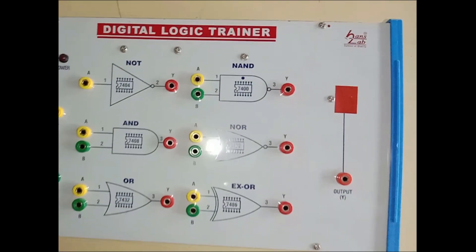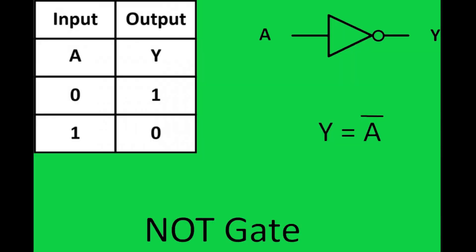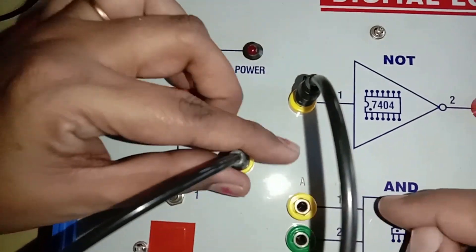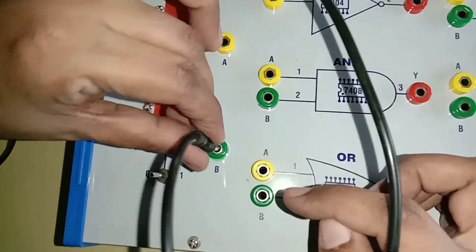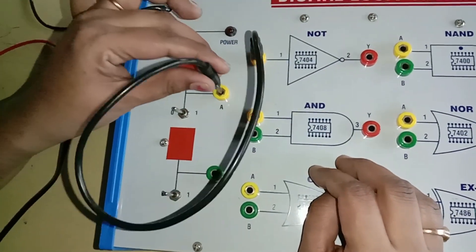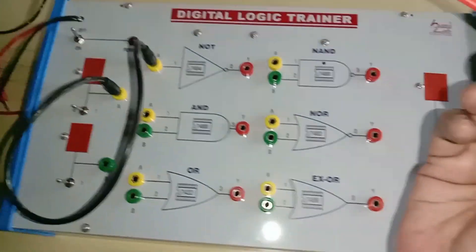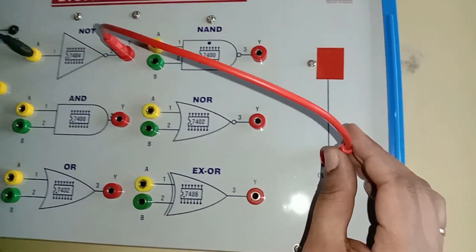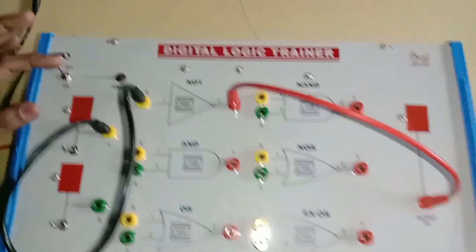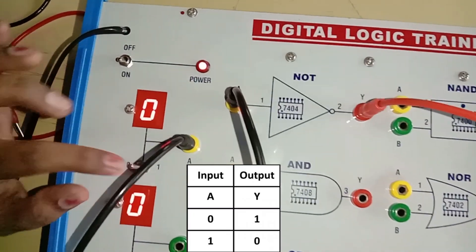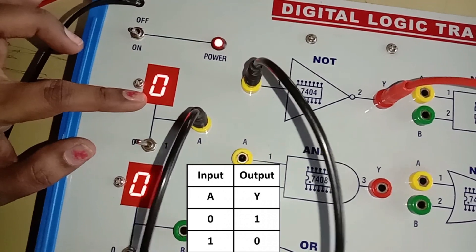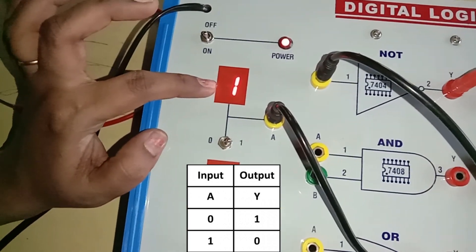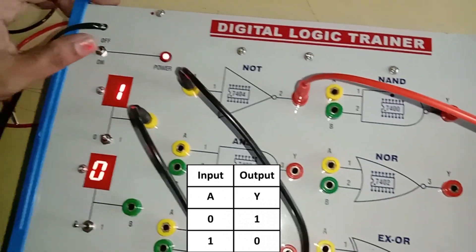Let us start with the NOT gate. This is the truth table of the NOT gate. Terminal 1 is given as the input; we have two inputs A and B. I am using input A. The output is taken from terminal 2 and connected to output Y. Now turn on the logic trainer. With input 0, the output is 1. Now changing the input to 1, the output is 0. Thus the NOT gate is verified.